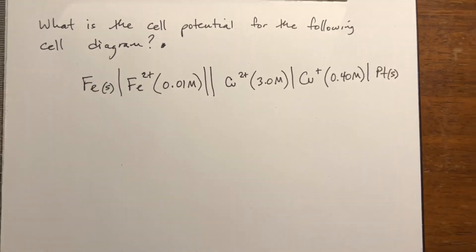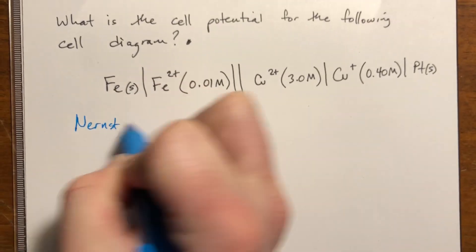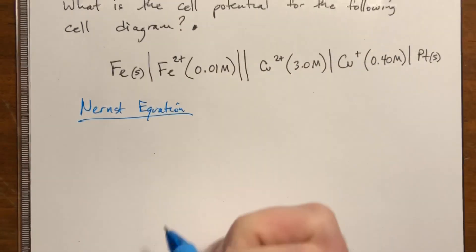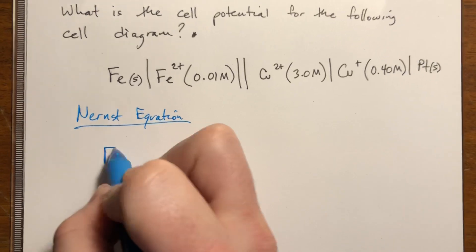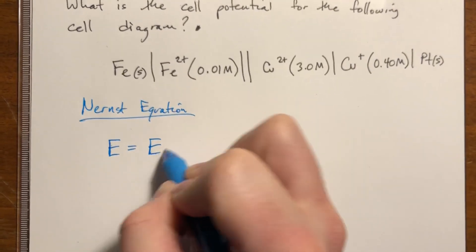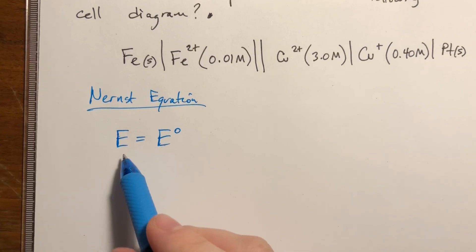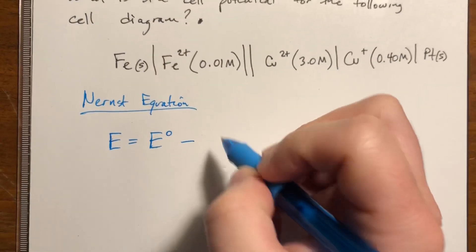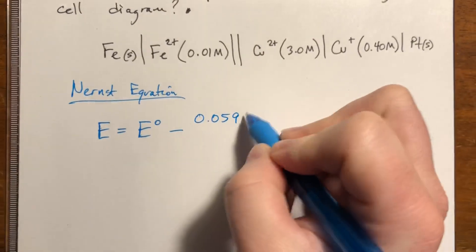So the way that we're going to do this is we're going to use something called the Nernst equation. The equation doesn't look all that horrifying, so it's essentially this is at non-standard conditions, and then we're solving for it at standard conditions. And the equation looks a little weird, but it's not terrible. It's essentially a bunch of constants collapsed down together.